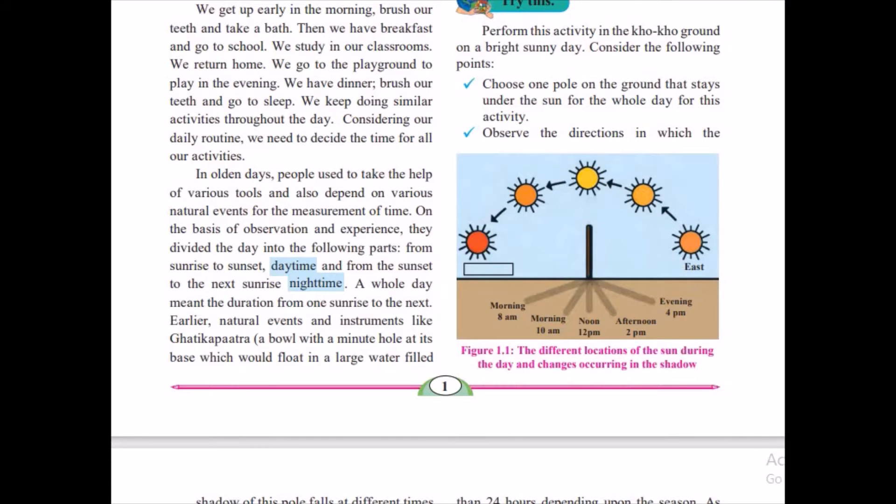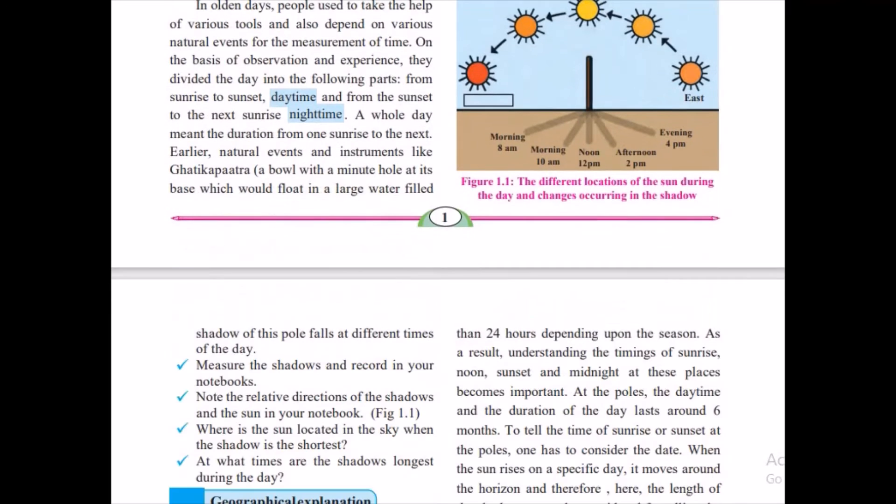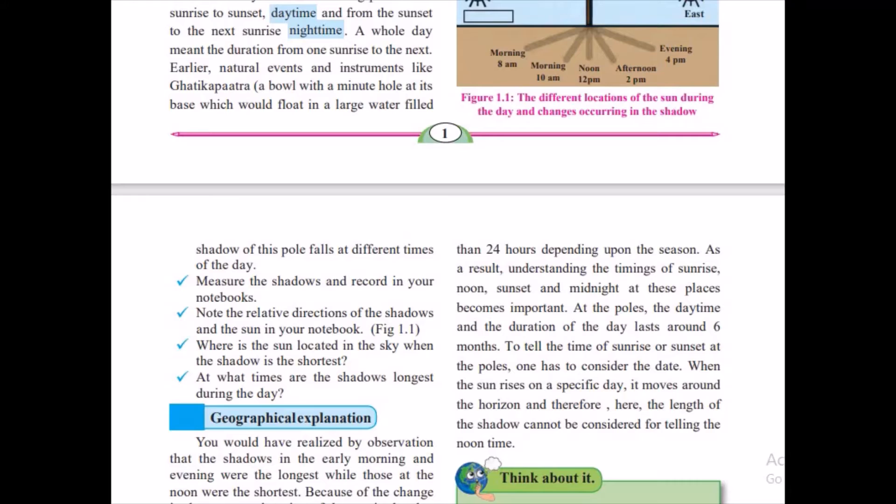Now, my dear students, I would like to explain it with a small activity. Take a pole. During the noon time, just fix that pole. And you will find during noon time, the reflection is very small because the sun is at horizon, at the top. So, we find the shadow is very small.